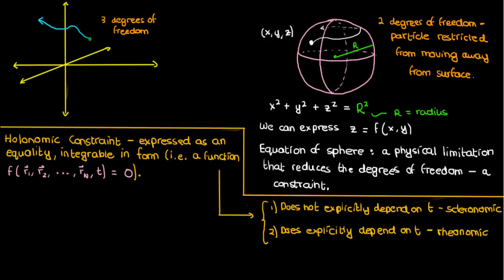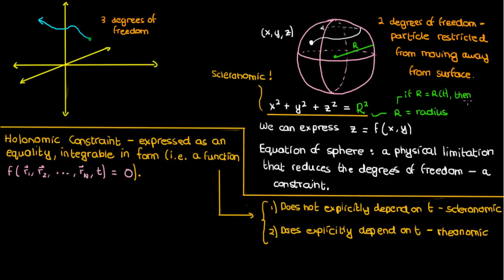Pop quiz: what type of constraint is the equation of the sphere? It's a scleronomic constraint because it does not explicitly depend on time. Now, if the radius of the sphere happened to be an explicit function of time, then the constraint would become a rheonomic constraint. But for a constant radius capital R, we just have a scleronomic constraint.